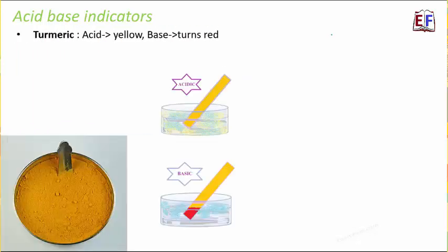Another indicator is turmeric, which is very easily available in our kitchen — especially in India, we use turmeric in more than 50 percent of dishes. Turmeric is also called haldi. If you prepare a strip of turmeric, it is yellow if the solution is acidic in nature and it turns red if it is basic in nature. Often if you mix substances used in cooking — which contain base — with turmeric, you would notice a change in color.